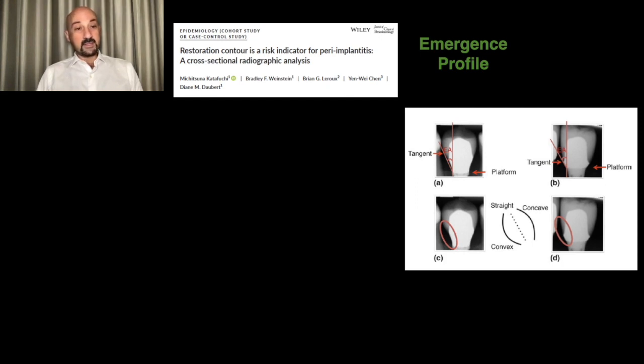This well-known study from Katafuchi identified emergence profile angles around prostheses on bone level and tissue level implants and correlated them with clinical outcomes in terms of peri-implantitis.